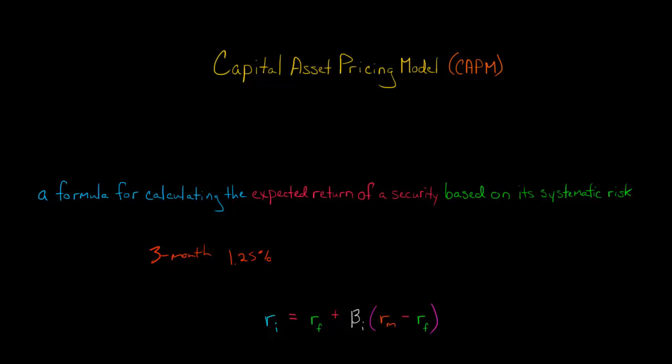Then you add to that the beta of security i, so beta sub i. Beta is a measure of the systematic risk of this security. Basically, how much is the value of that security tied to the overall market performance? So we've got this measure of systematic risk, beta, and then we multiply that by this whole thing right here, which is the market risk premium.